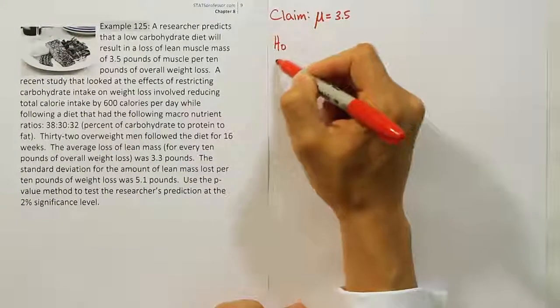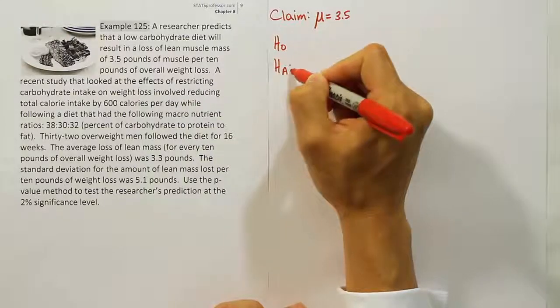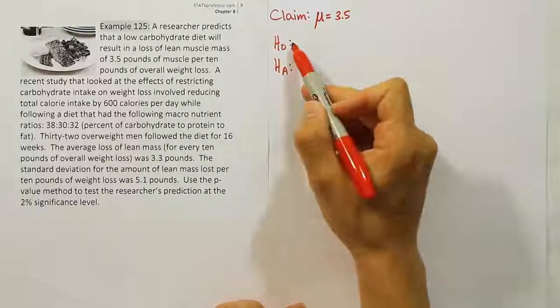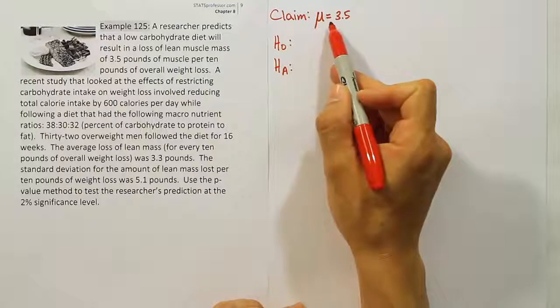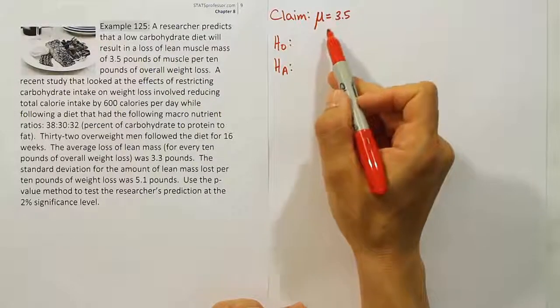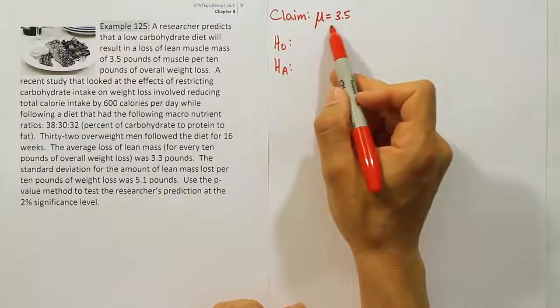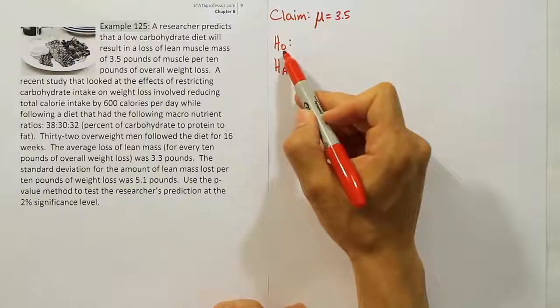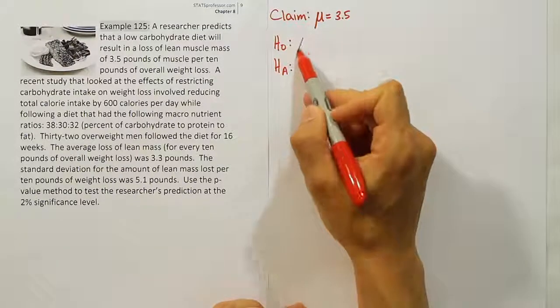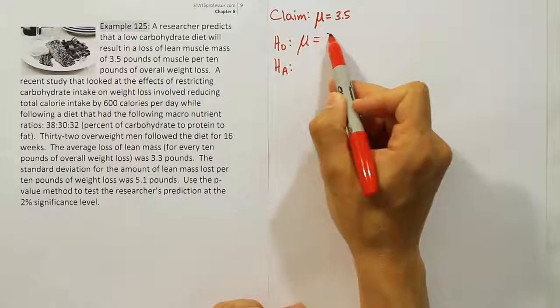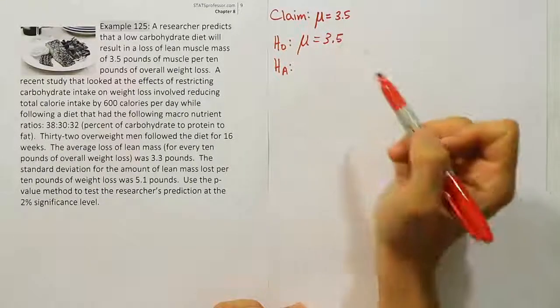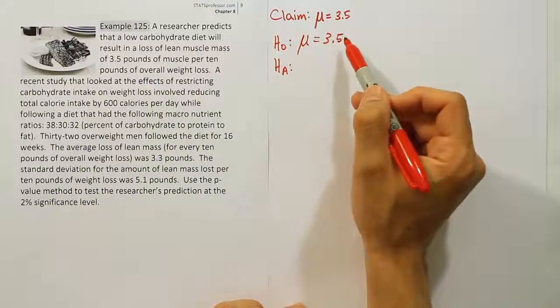From there, we're going to have the null hypothesis and the alternative hypothesis. The null hypothesis always has an equal sign. Because the claim has an equal sign, H₀ will be the same as the claim in this example. So H₀: μ = 3.5.